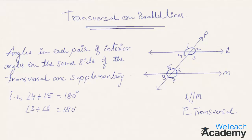In summary, when parallel lines are intersected by a transversal: corresponding angles and alternate interior angles are always equal, and interior angles on the same side of the transversal are supplementary. This was a basic introduction to transversal on parallel lines. Do like and subscribe to vteachacademy.com. Thanks for watching!